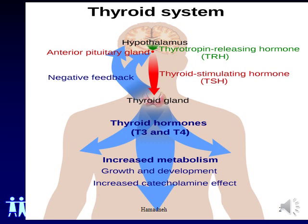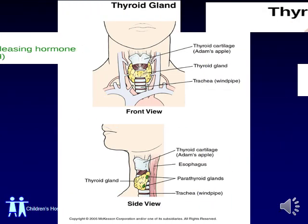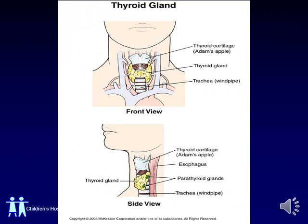The hypothalamus itself acts as a thermostat, since it tells the pituitary gland at what level the thyroid should be set. The thyroid gland produces thyroid hormones T3 and T4. As we see in this picture, the thyroid gland is found at the front of the neck. It has a butterfly shape and contains two lobes, right and left.